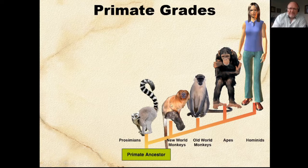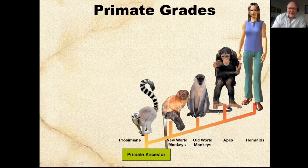They use their tail to hang on. Then we have the new world monkeys — they still have a prehensile tail and jump around, like this golden tamarin. Then we have the old world monkeys, which are more like baboons. The important thing about old world monkeys is that their tail is just for balance — it's no longer prehensile. And then lastly we have the hominins, which become the apes, and eventually homo sapiens.